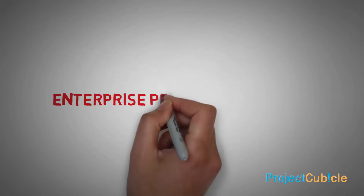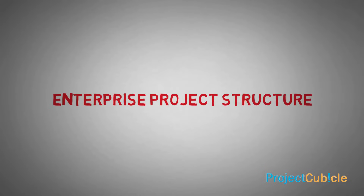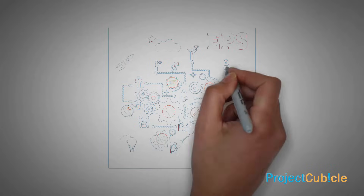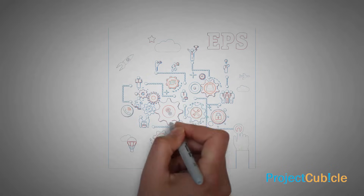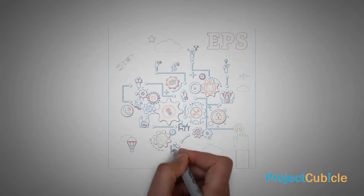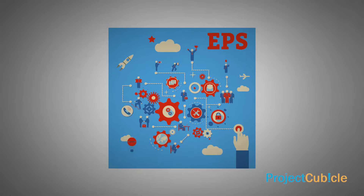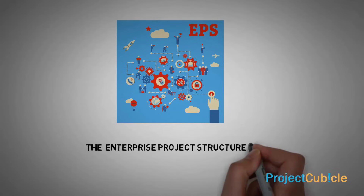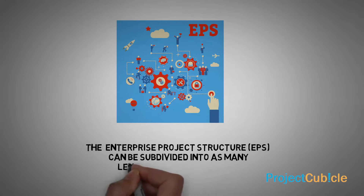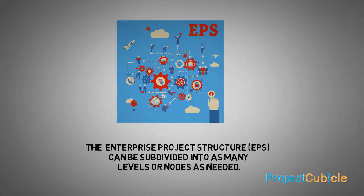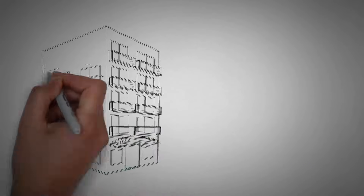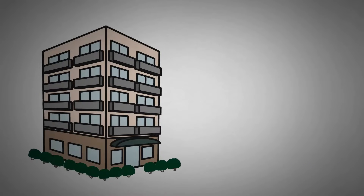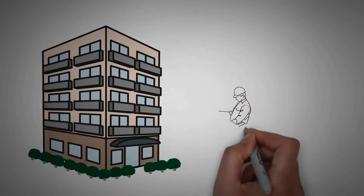Enterprise Project Structure. The Enterprise Project Structure demonstrates the hierarchical structure of all projects in the database. It can be subdivided into as many levels or nodes as needed. For example, construction projects of a company will be under the construction EPS.